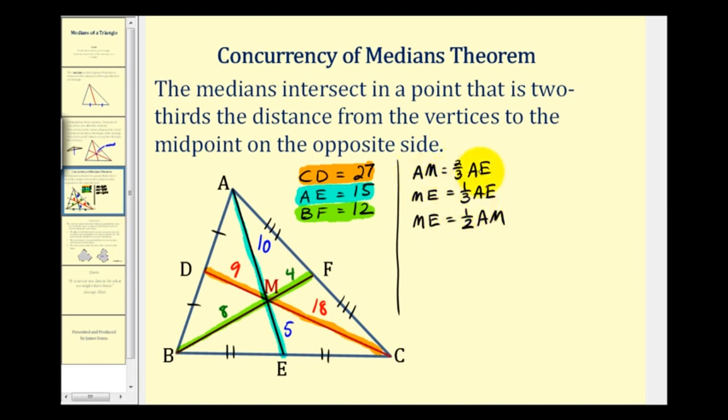Hopefully that makes sense. If AM is two-thirds AE and ME is one-third AE, ME is always going to be half of AM. And we can state the same properties for each median. If we take a look at the median CD here in orange, CM is going to be two-thirds CD. And MD will be one-third CD. And again it follows that MD will be one-half of CM.